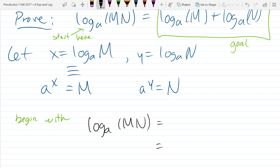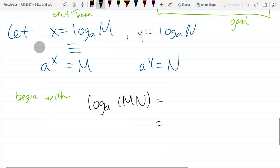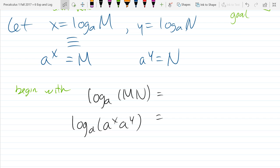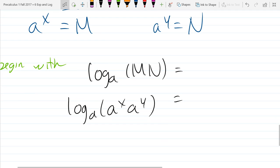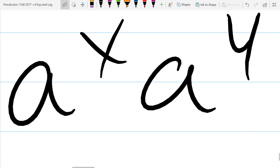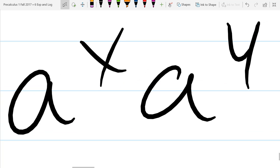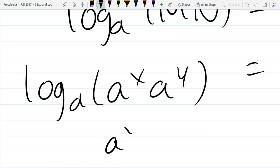So we're going to begin with log base a of MN. So the first thing I'm going to do is rewrite M and N in these forms right here. We do not have an identity that gets us out of this situation directly. If I just look inside at the exponential part, what can I do right here? You can add the exponents. So I can add the exponents.